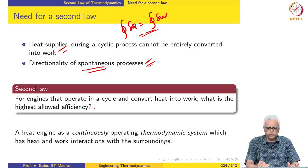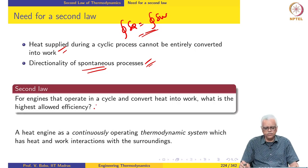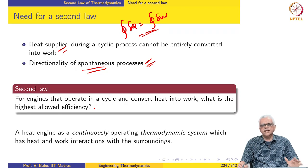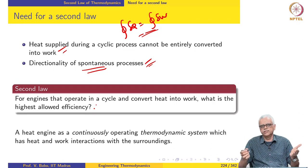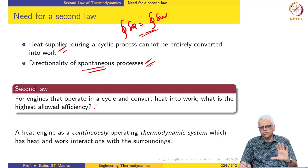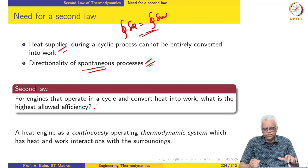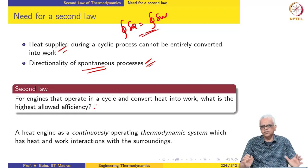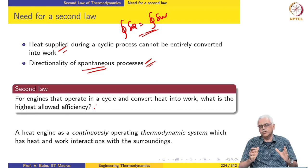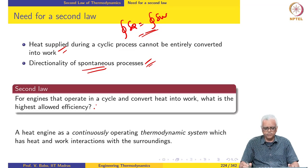The first question we are going to try to answer using the second law is: for engines that operate in a cycle and convert heat to work, what is the highest allowed efficiency? In other words, if I have an ideal engine, what is the efficiency for such an engine? We will formally define efficiency and formally define a heat engine next. These things need to be formalized so that there is no ambiguity or gaps in our understanding as we look at much more complicated devices.